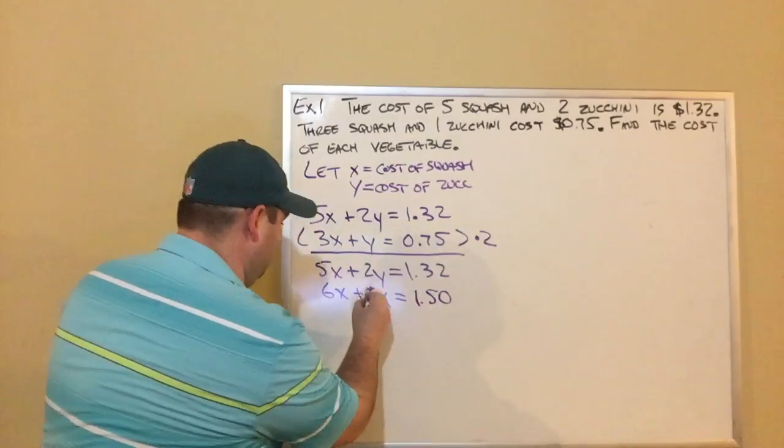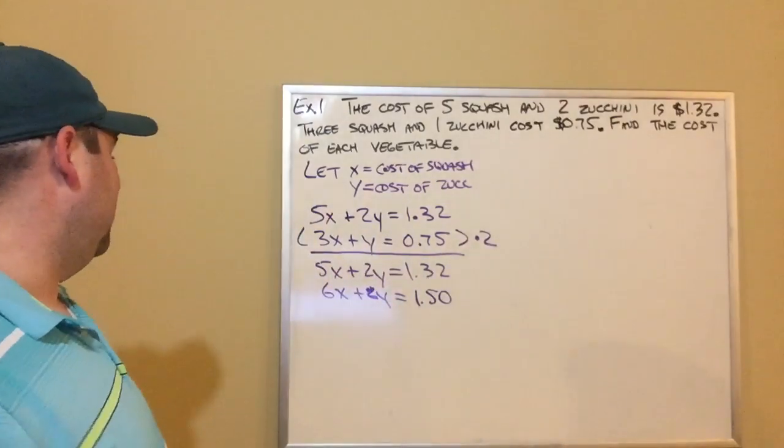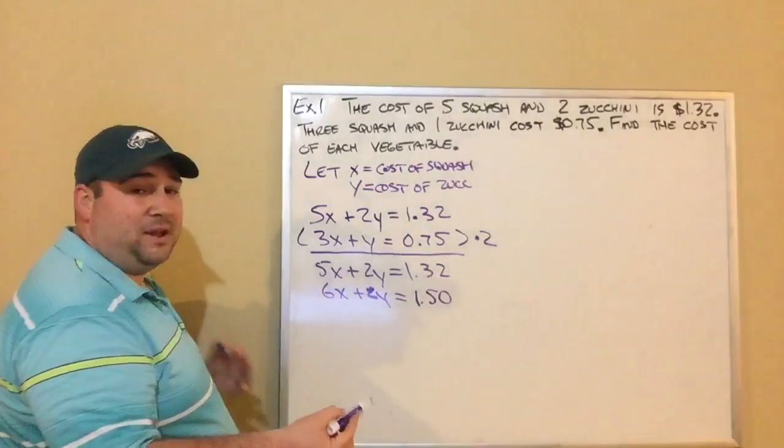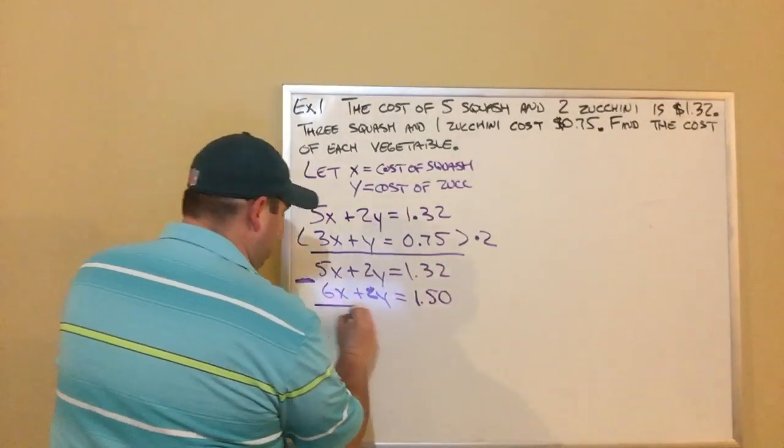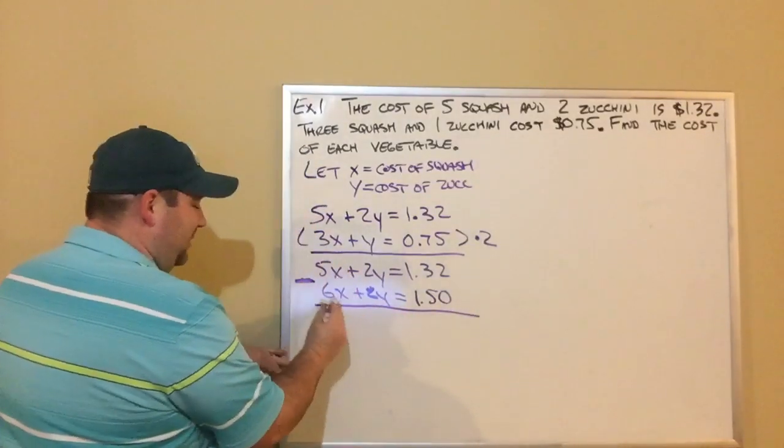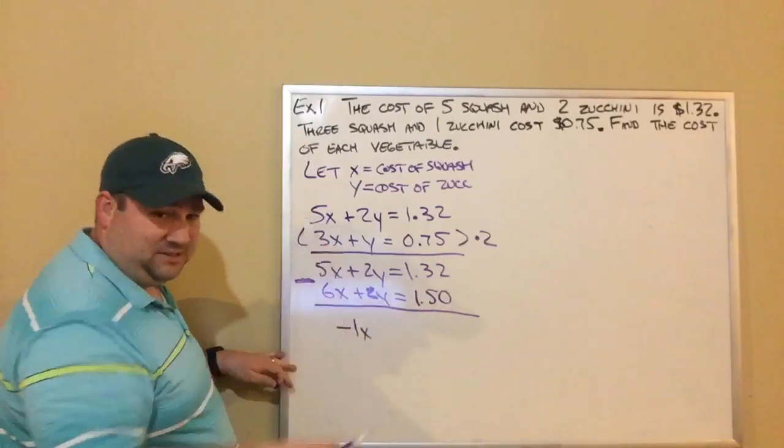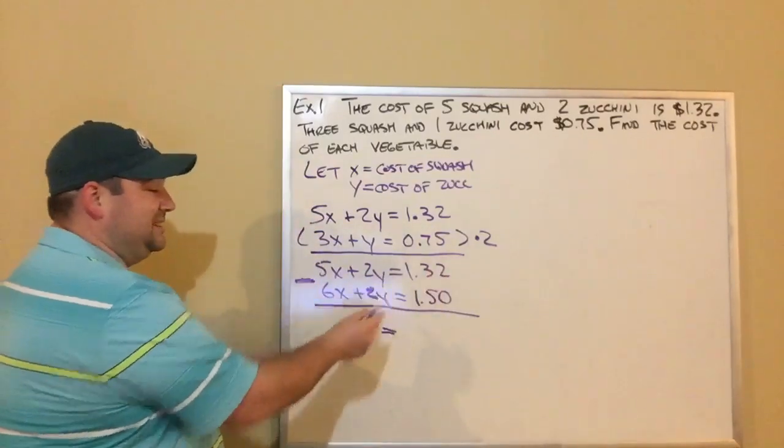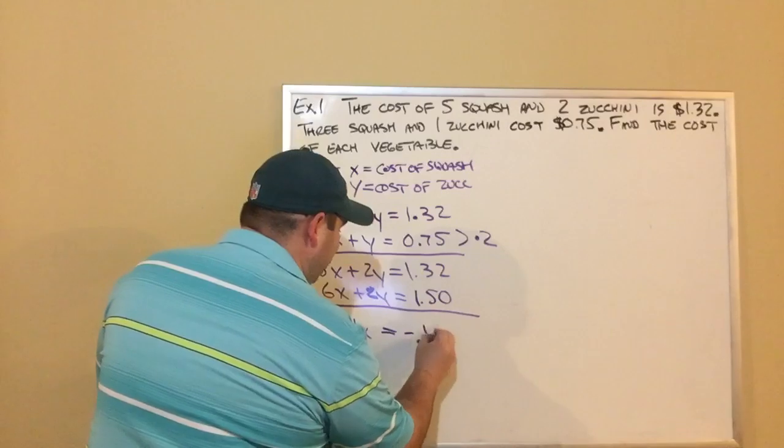So now I'm going to look at this. Do I add or do I subtract? These are both positive 2Y's. To cancel them out, 2Y minus 2Y is zero. So I am subtracting. So I have 5X minus 6X. That's negative 1X. 2Y minus 2Y cancels out. That was the whole point we eliminated. Then I'm going to do $1.32 minus $1.50. Again, you've got a calculator. That's going to be negative 18 cents.